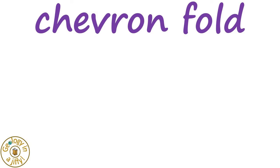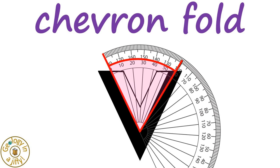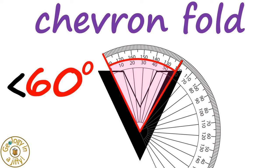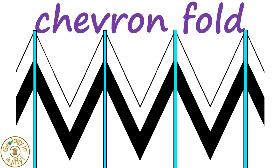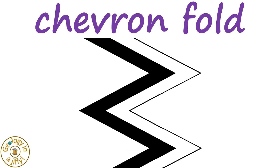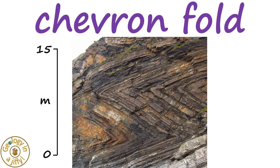In a chevron fold — with the term chevron simply meaning V-shape — the inter-limb angles are generally 60 degrees or less, and they often form repeated folded beds with straight limbs and sharp hinges. The axial planes range in orientation from vertical through to horizontal, as seen in the small-scale fold in Cambrian age schist in North Wales, and in the famous sequence in the cliffs at Millook Haven in Cornwall, England.